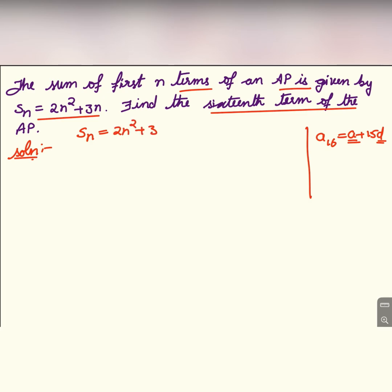If we give the value for n as 1, then S₁ = 2(1)² + 3(1) = 2 × 1 + 3 = 2 + 3 = 5. So the first term S₁ means the sum of first term, that is a itself. S₁ is a itself.